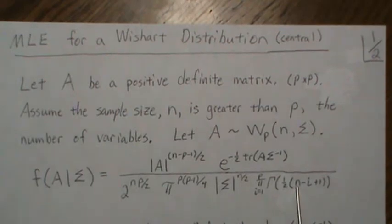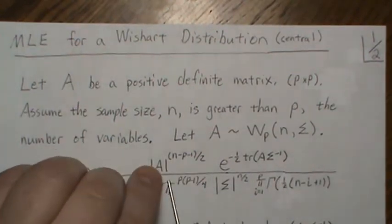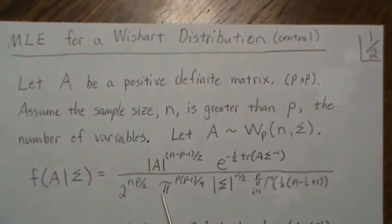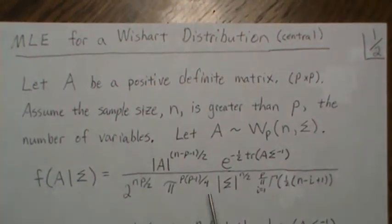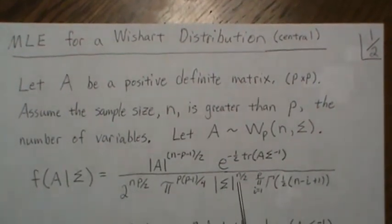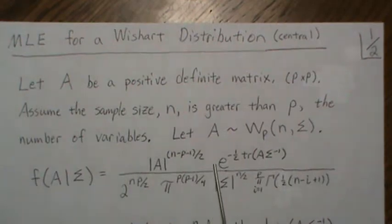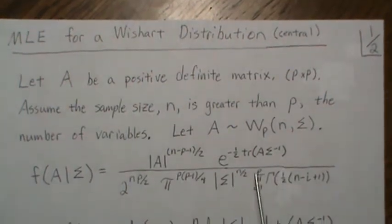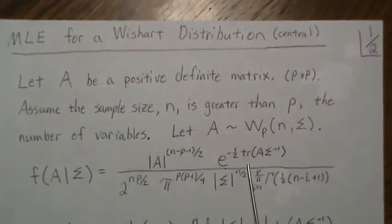So these four terms, one, two, three, four, can be all grouped together on the front and just called a constant. And then this determinant of sigma raised to the n divided by two can be taken to the top, so there becomes a negative out front, and this stays the same.